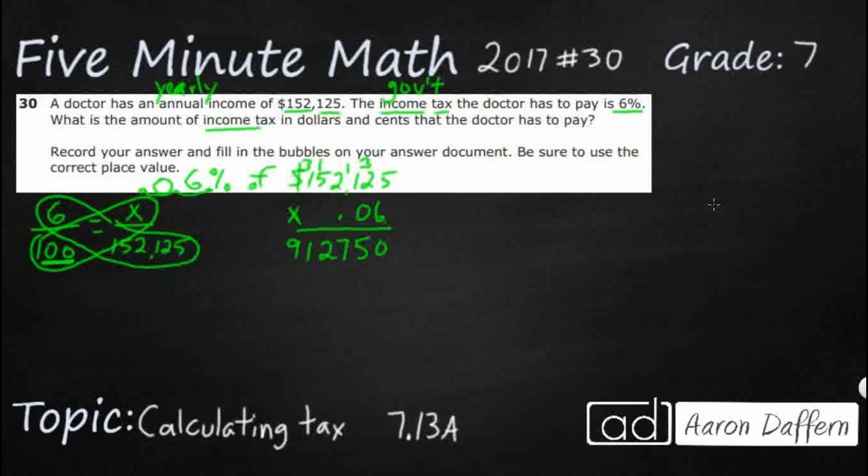Now, this might be looking to you like this is way too large—912,750. But remember, we have two digits upon the decimal in our factor, so we need two digits upon the decimal in our product.